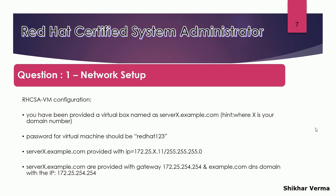That would be mentioned in your test paper, so no worries. Here a very simple question for the setup of your network — you can see they have mentioned server x.example.com and given the password as well. They have also provided the IP: 172.25.x.11, where x is your system number. If it is 13, your IP would be 172.25.13.11. Your gateway is also provided, so you have to configure an IP to the system.